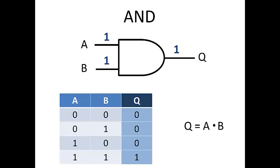That's the AND function. We write this in Boolean algebra in equation form as Q equals A dot B, or Q equals A times B. The AND function is sometimes referred to as Boolean multiplication.